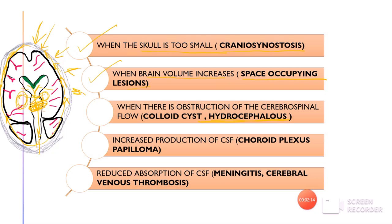A papilloma in the choroid plexus can cause increased CSF production, raising CSF pressure. Another cause is reduced absorption of CSF. When CSF reaches the subarachnoid space, it gets absorbed through the meninges and is taken away by the cerebral veins. Meningitis or cerebral venous thrombosis can reduce this absorption. When production increases or absorption decreases, the amount of CSF circulating in the brain increases, raising intracranial pressure.